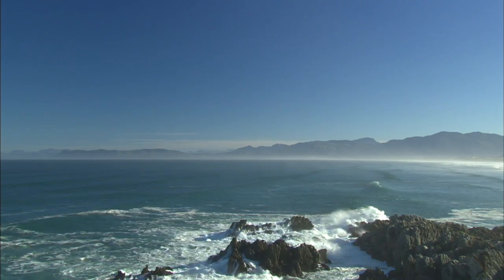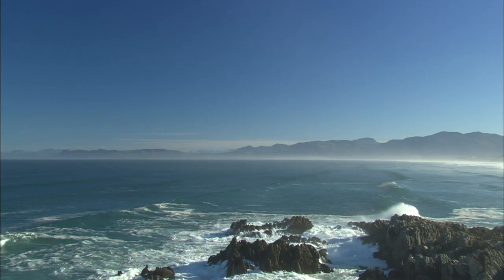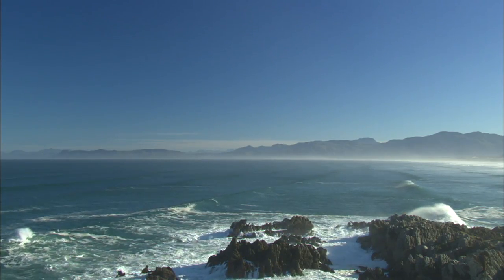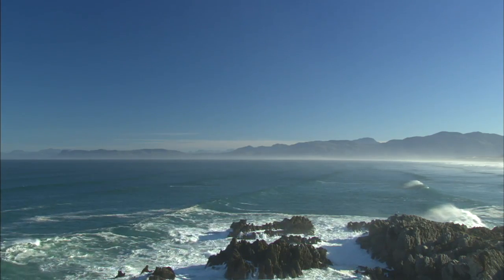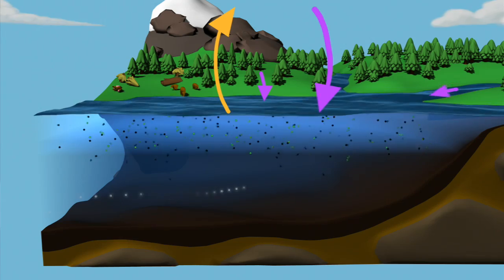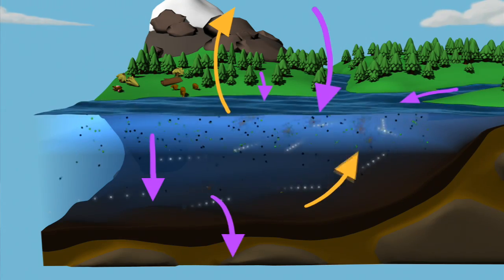Moving offshore, the ocean holds huge amounts of carbon — about 50 times the amount we find in the atmosphere. The ocean is sometimes called a carbon sink, meaning that it absorbs or takes up carbon from the atmosphere. It takes up carbon through physical and biological processes.